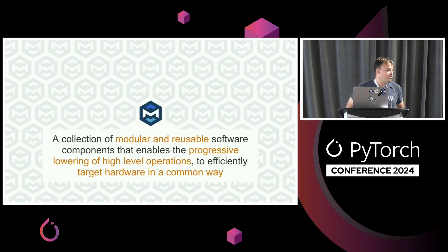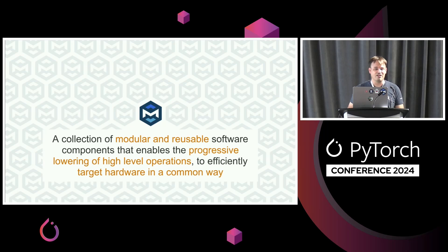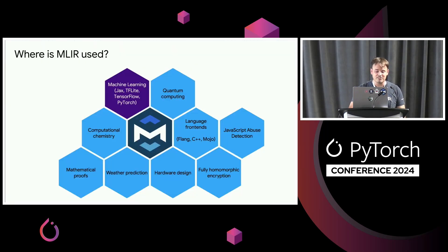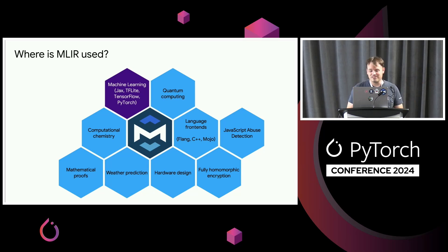A lot of the talk is going to be about MLIR. MLIR is a collection of modular and reusable software components that enable the progressive lowering of high-level operations to efficiently target hardware in a common way. It's a toolkit we use in many of our different projects and deployment scenarios.